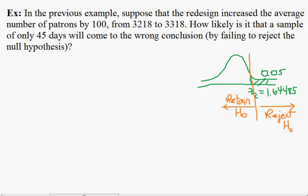This is a continuation of the storefront problem. In the first part of the problem we made a determination about whether or not to retain or reject the null hypothesis. Now we have a follow-up question. Suppose that the redesign actually did work and that the average used to be 3218 is now 3318. How likely is it that a sample of 45 days will come to the wrong conclusion by failing to reject the null hypothesis?